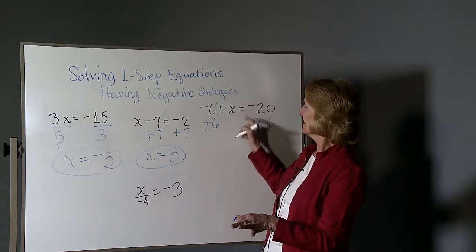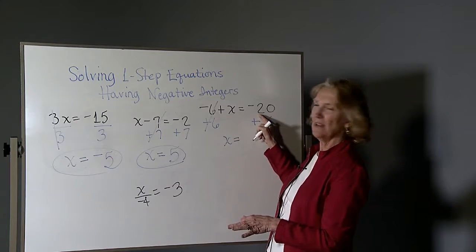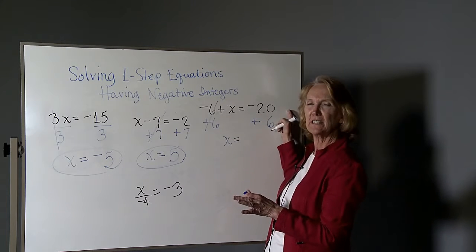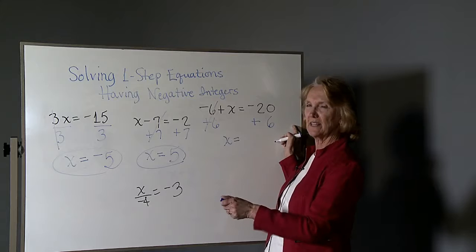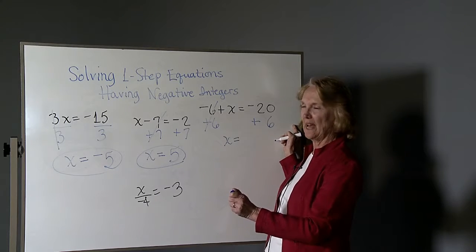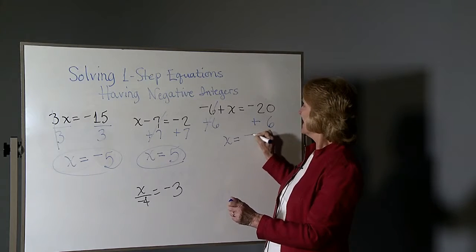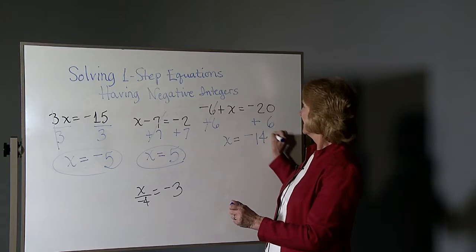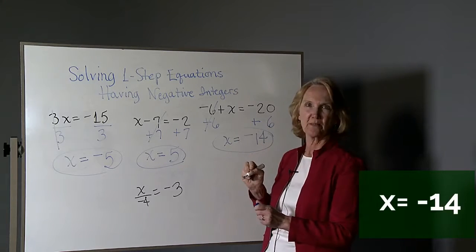You're left with x equals. Now you have negative twenty plus six. If you're in debt twenty dollars and you pay off six, you're not so badly in debt. So you're in debt fourteen. So a negative fourteen becomes that answer.